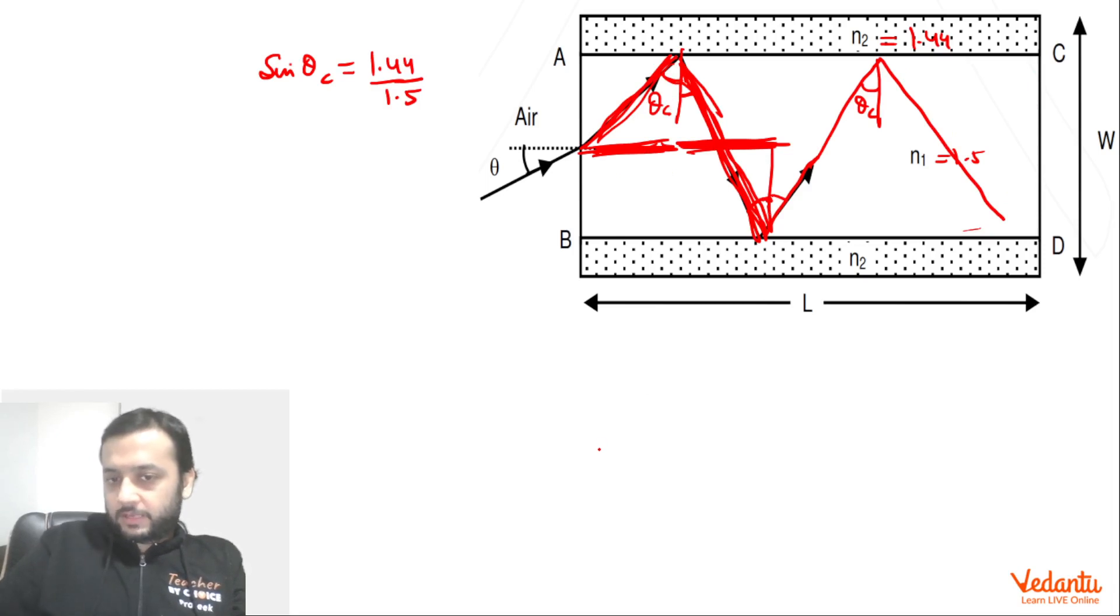If you can't understand this, we can show it over here. So basically this is L1, so this is L1 by sin theta c. Let's say this is L2, so this is L2 by sin theta c. This is L3, so this is L3 by sin theta c. So you can see that the whole path will become L by sin theta c, the whole zigzag path.